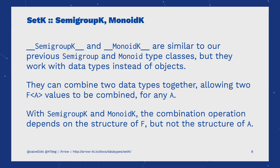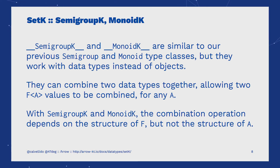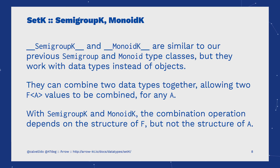SemigroupK and MonoidK are special cases — they are universal type classes which operate on kinds, which is what the K in their names stands for. The subtle difference between Semigroup and SemigroupK, Monoid and MonoidK, is that while Semigroup and Monoid operate on the values contained in the type constructor, SemigroupK and MonoidK operate exclusively over the entire structure and not the individual items.